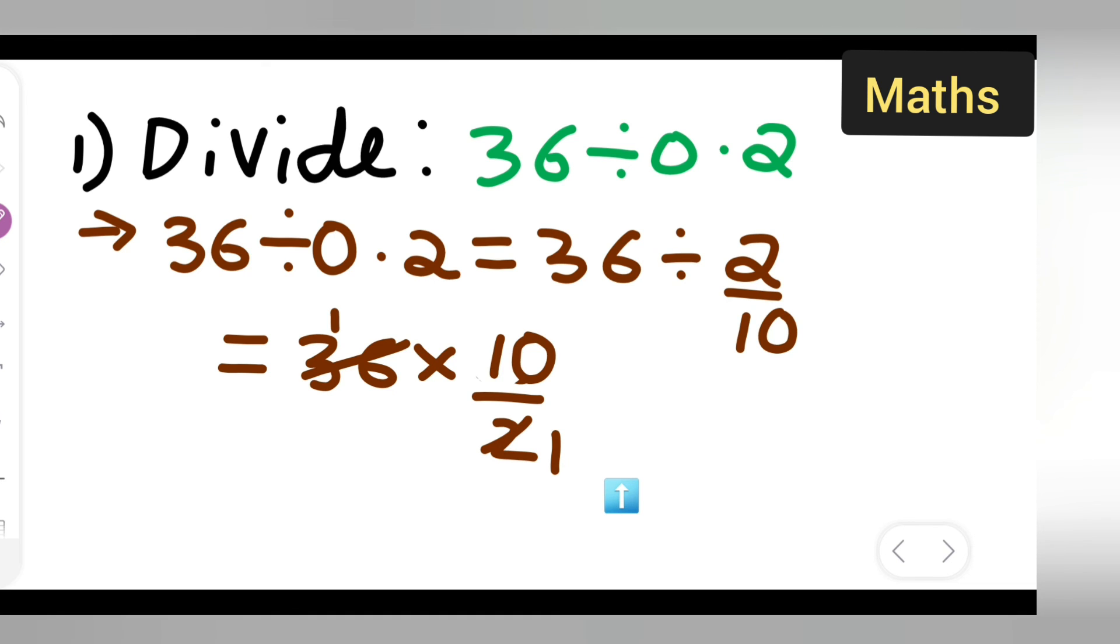Then carry one, then two eights are 16. So you got 18 multiplied by 10, so what will be your answer over here? 18 multiplied by 10, your answer will be 180. So I hope you'll have understood how to divide 36 by 0.2, and thanks for watching.